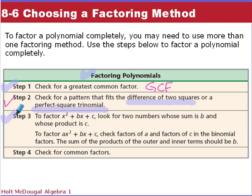The next step, if you have the form x²+bx+c, so your a is 1, look for two numbers whose sum to b and product is c. So you're looking for sum to b, product of c. When you have an a, a coefficient in front of the x squared, instead of 1, you want to check for factors of a and factors of c. So the sum of the products of the adjacent terms should give you your b term.